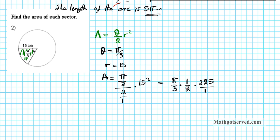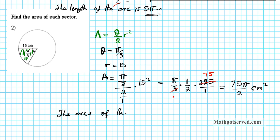One cool thing about this product is that three is a factor of 225. Three goes into 225, 75 times. Multiplying across: 75 times 1 times pi is 75 pi. The denominator is 1 times 2, giving 75 pi over 2. The unit is centimeters squared, since you multiply a length by itself — that's a two-dimensional unit. So the area of the sector is 75 pi over 2 centimeters squared.